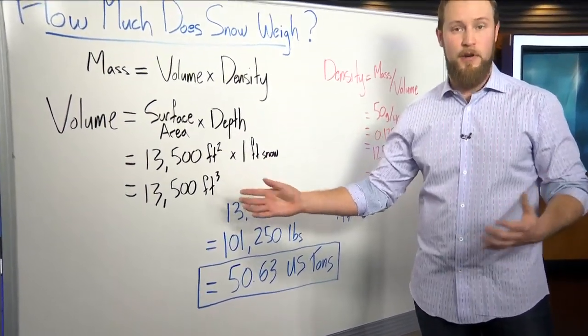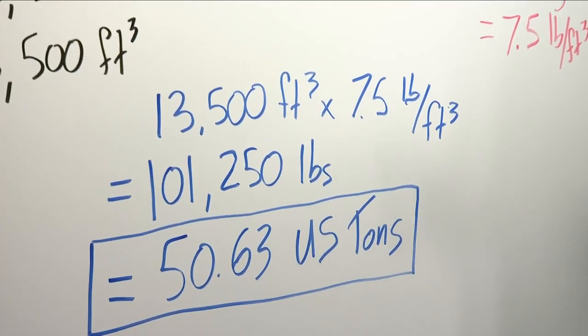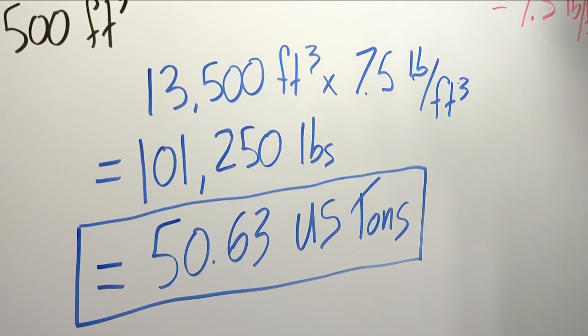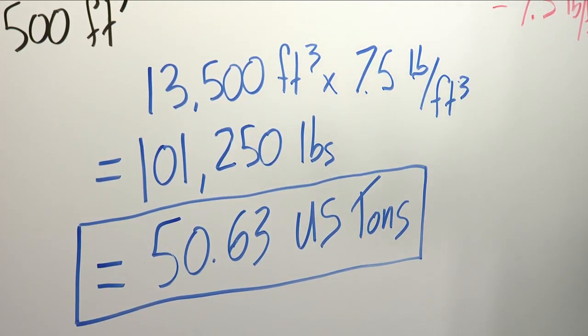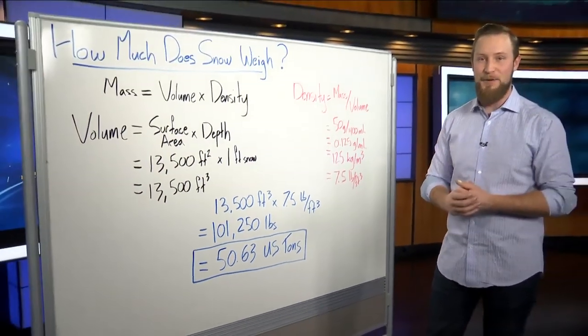That leaves us with 13,500 cubic feet of volume. We now multiply that volume by the density. That's going to give us our final mass, which is 101,250 pounds.